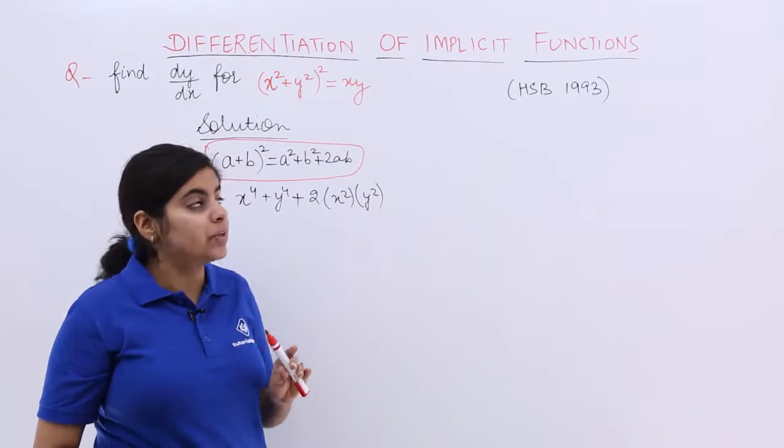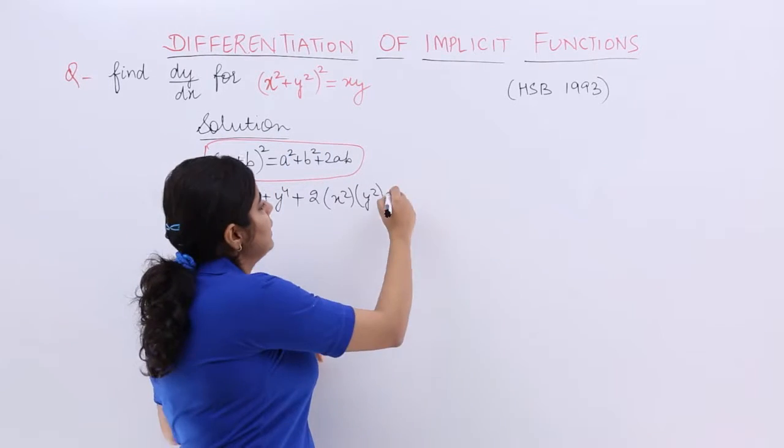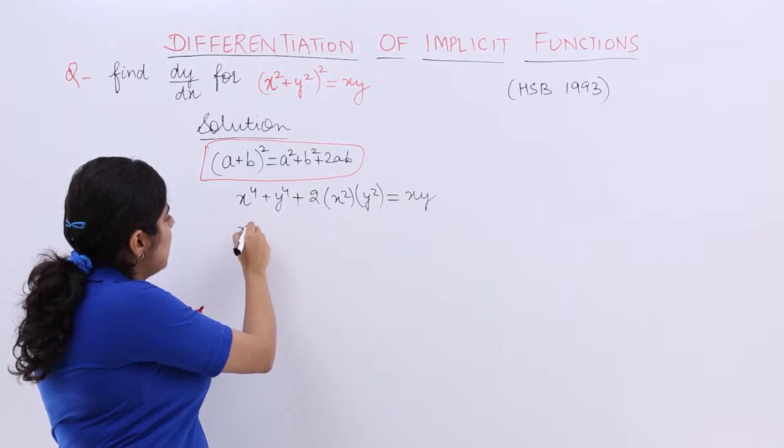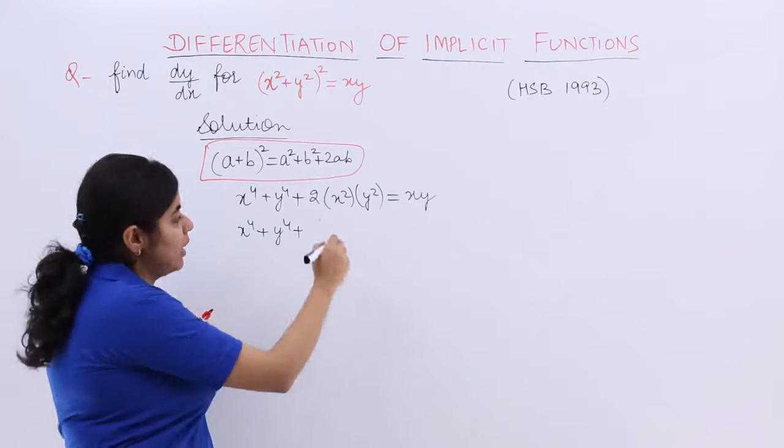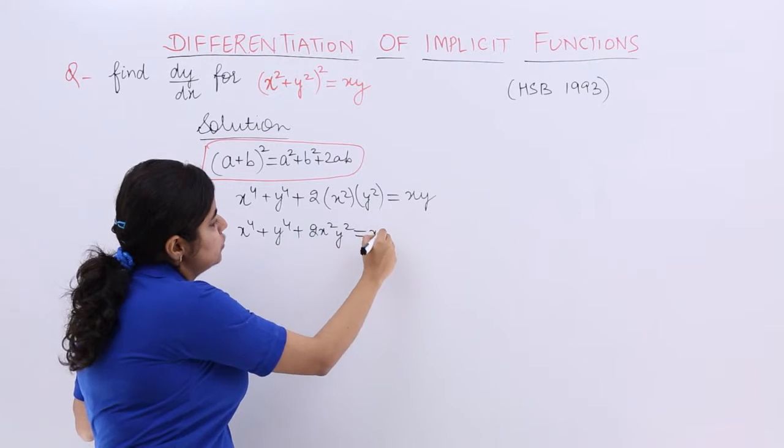And then you open this. So this became like this. But the right hand side was xy, it remained like that only. Let me write it again. It is x⁴ + y⁴ + 2x²y². And it is equal to xy.